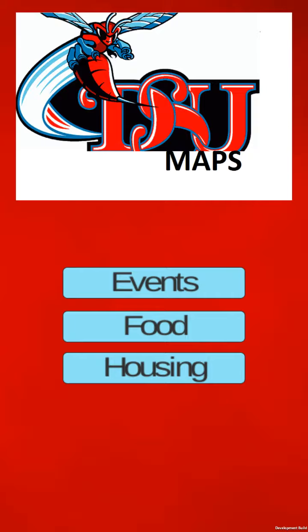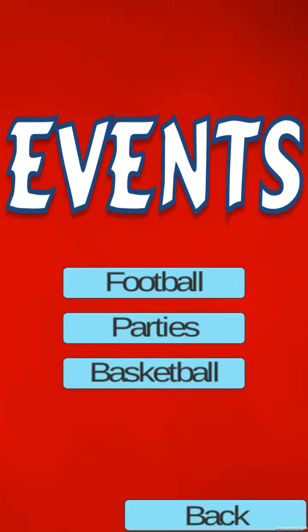It shows different things that might be going on at DSU or places you might want to go. You click on Events and it takes you to the events that will be happening, like football games, parties, basketball games. If you choose football, it'll take you to the football field.